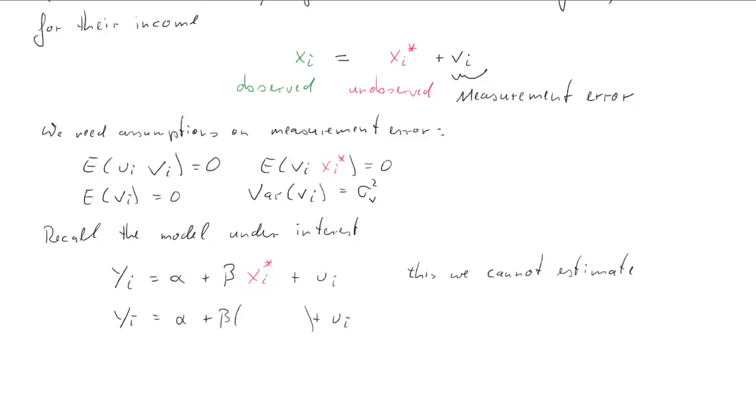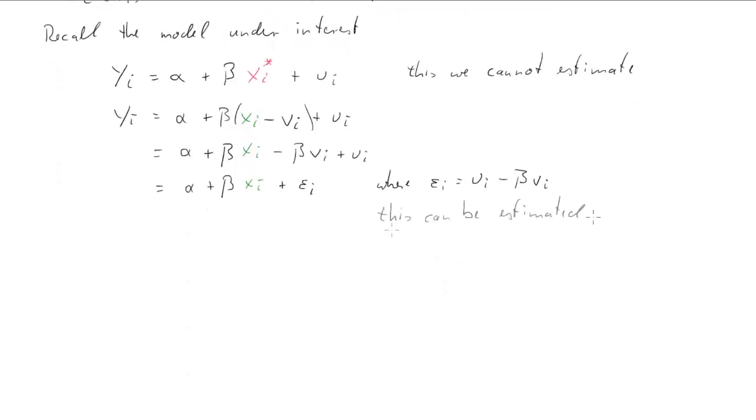So what we'll do is we replace the xi asterisk with our xi minus the measurement error and we do just a little bit of algebra. We isolate the xi term and now we have two error terms here and we just collect them in one new error term which we call epsilon i. So epsilon i is ui minus beta times vi, the original regression error and vi the measurement error combined. Now this can be estimated and also note that the alpha and the beta are actually the same parameter coefficients as we had them in the original regression model which we are interested in estimating.